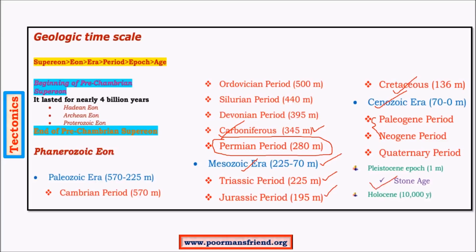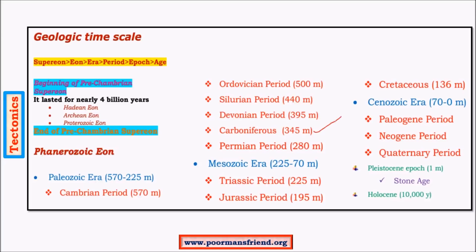The modern era covers approximately the last thousand to a few hundred years. This is a brief introduction to the geologic timescale. You need not remember all these names, but a few important ones keep coming up in future videos and in many geography concepts, so keep track of them.